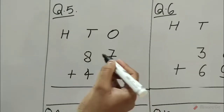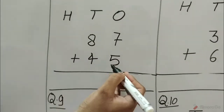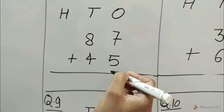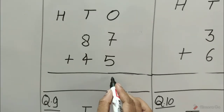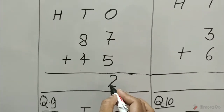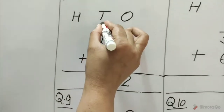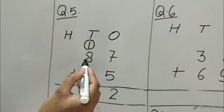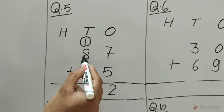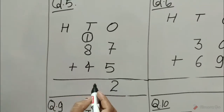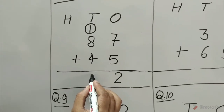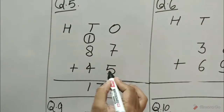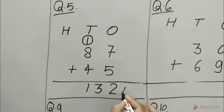Question number 5 is 87 plus 45. Let's add ones first: 7 plus 5 is equal to 12. 12 means 1 ten and 2 ones. Write 2 under the ones and 1 carry over at tens. Let's add tens: 1 ten plus 8 tens is equal to 9 tens, plus 4 is equal to 13 tens. 13 tens means 130. So, 87 plus 45 is equal to 13 tens.